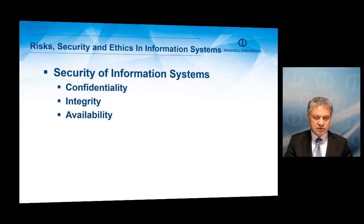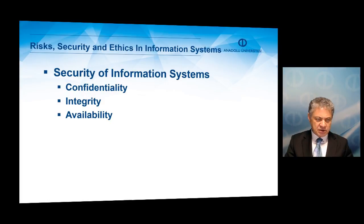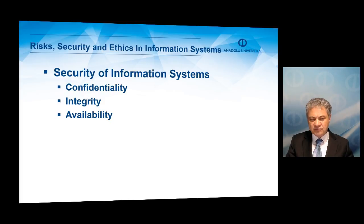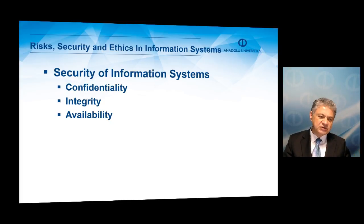When we have special information systems such as decision support systems, expert systems, and business analytics, they all require close attention to risk, security, and ethics. Security of information systems is captured by the CIA triad: C stands for confidentiality, I stands for integrity, and A stands for availability. Confidentiality means prevention of unauthorized access to information. Integrity means securing accuracy and consistency of information. Availability means securing continual access to information.